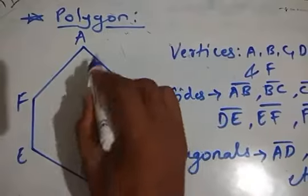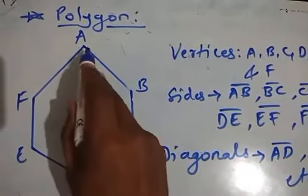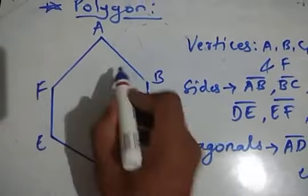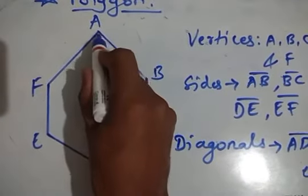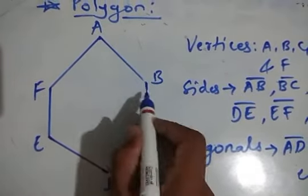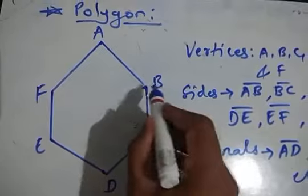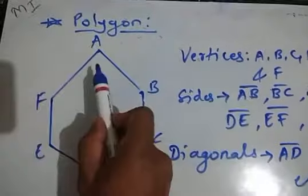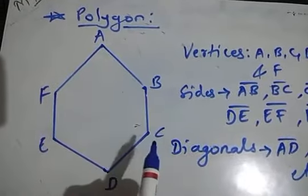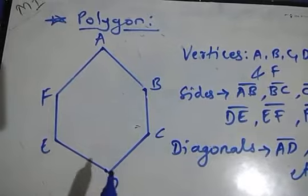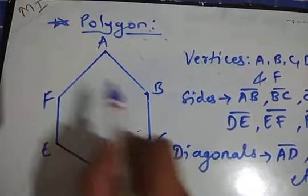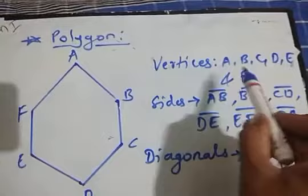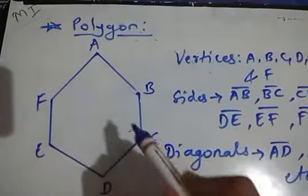Here, see students — A, B, C, D, E, and F. These corners, meaning a point where two sides join together, we call as vertices. So A is a vertex, B is also a vertex, C is also a vertex. Like that, A, B, C, D, E, and F are the vertices of this polygon.